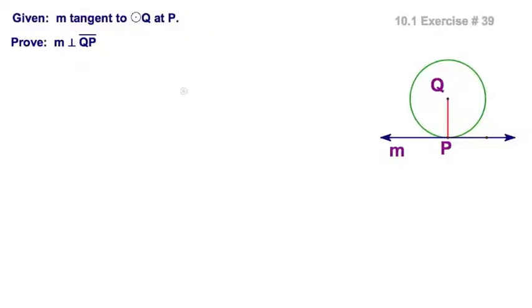Remember, I've got my given up here, and this is my conclusion I want to prove. Well, I want to prove that this tangent line M is perpendicular to QP. And the way I do that is, I show two possibilities. It's either QP is perpendicular to M, or some other segment QR. So I've got some R on there, is perpendicular to M. Either way, R could be any place on that line M.